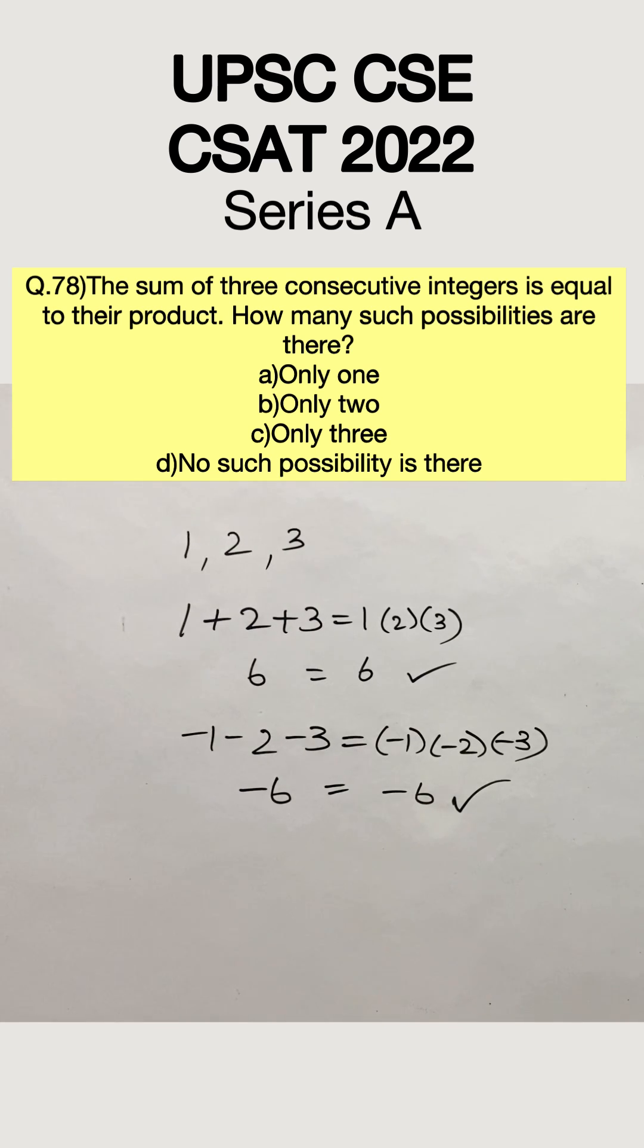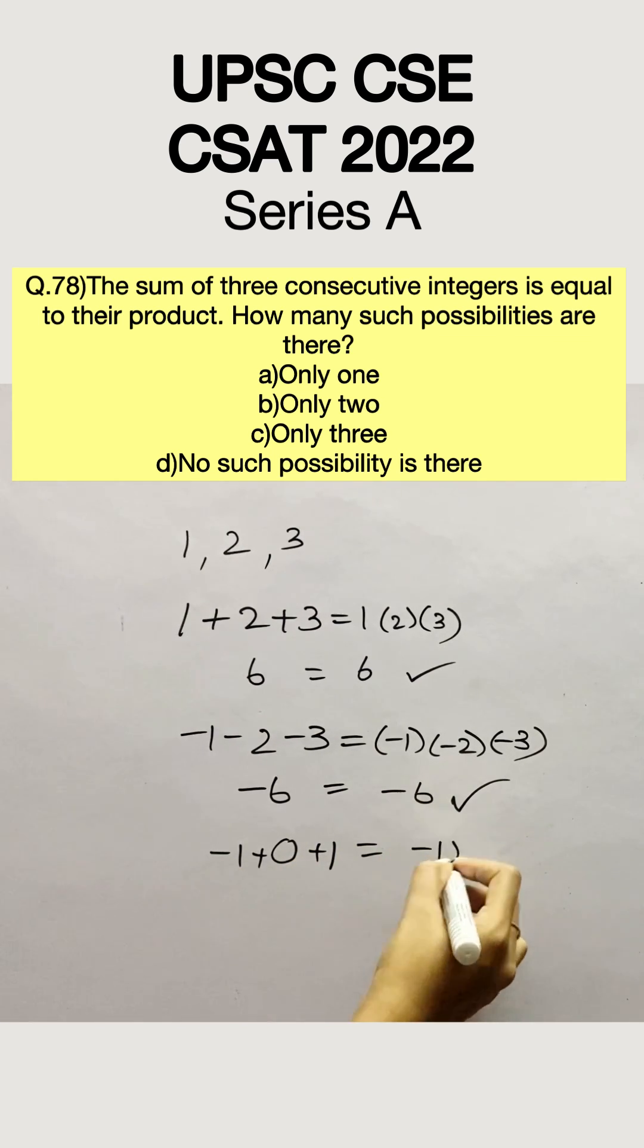So there is one more set that is between these two sets. That is minus 1, 0 and 1. If you check these values, the sum will be 0 and the product will also be 0. Therefore, this also satisfies the condition.